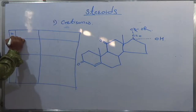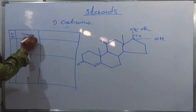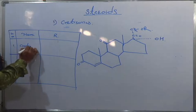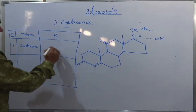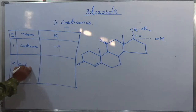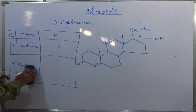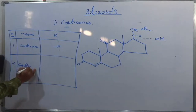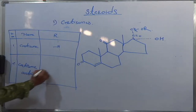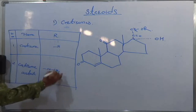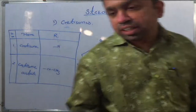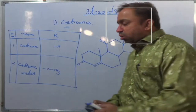Serial numbers, name, and R group. First: cortisone — R will be H. Second: cortisone acetate — R will be COCH3. Now the nomenclature of cortisol.